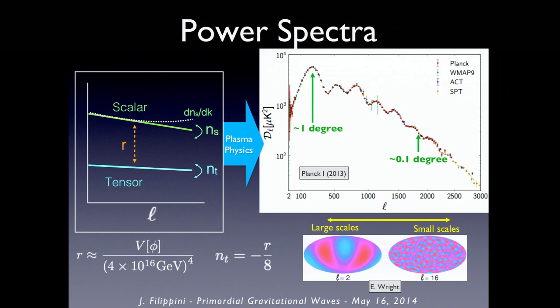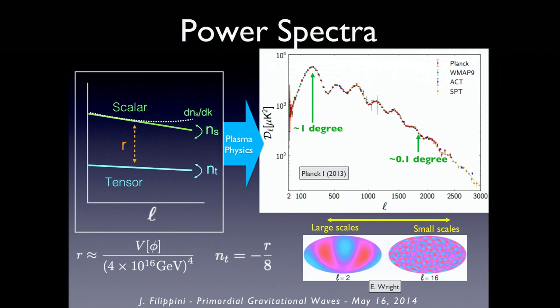Inflation generates roughly white noise in scalar and tensor perturbations, processed by plasma physics to become the power spectrum of the CMB. The CMB is quantum noise imprinted onto the sky, so we care about its power spectrum, not exactly where the hot and cold spots are. This plot is remarkable because there are error bars, though you can barely see them — the data is that good. There is a theory curve, but you can barely see it because the agreement is that good. This has been an enormously important tool for understanding our universe — what it's like, what it's made of.